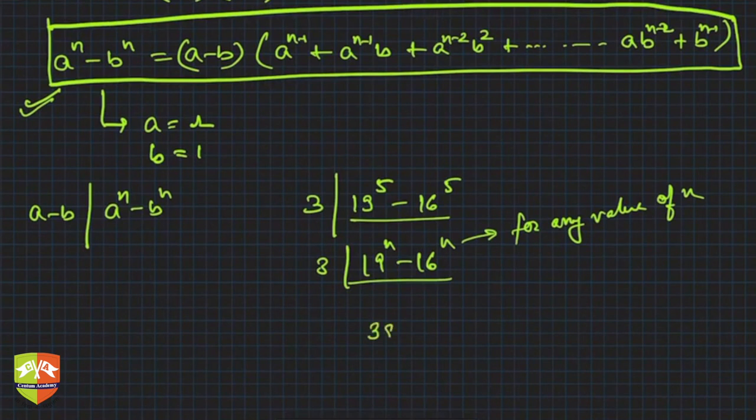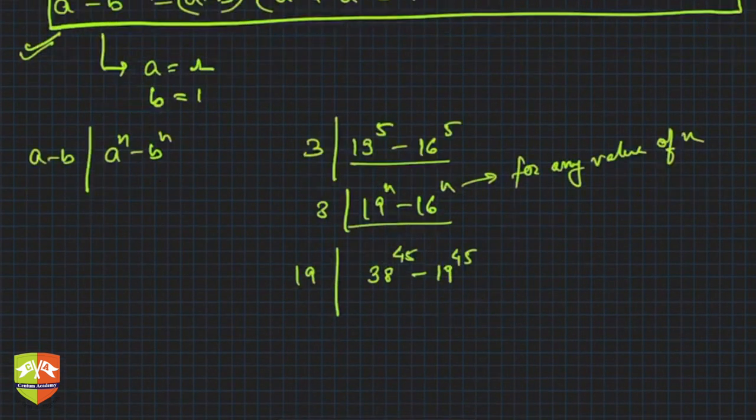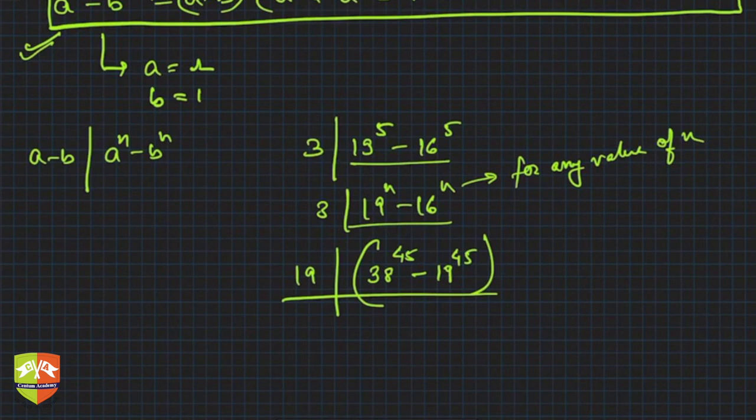So you can see 38^45 - 19^45. 19 divides this. 19 divides this entity. So without calculation you can say very clearly. Understood?